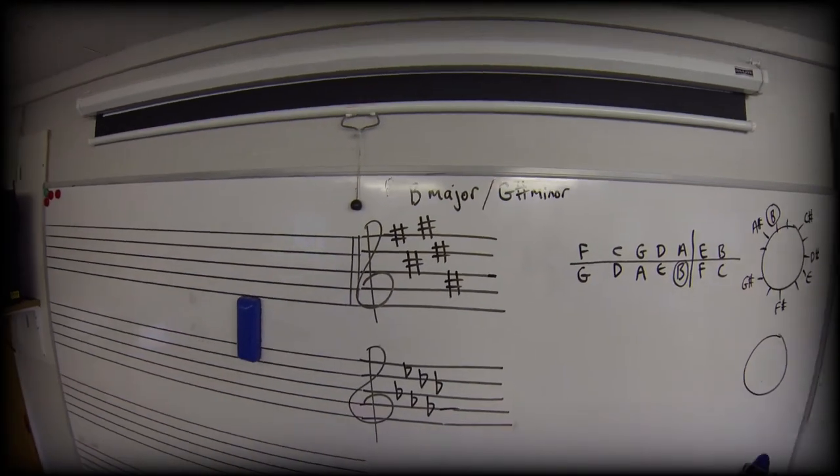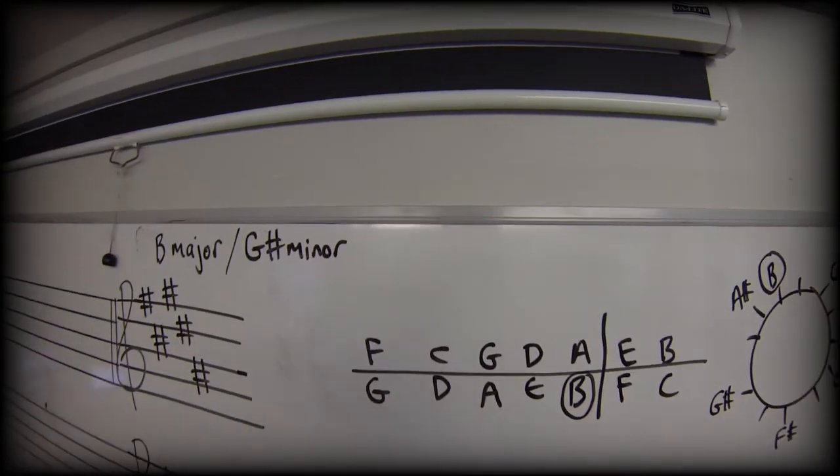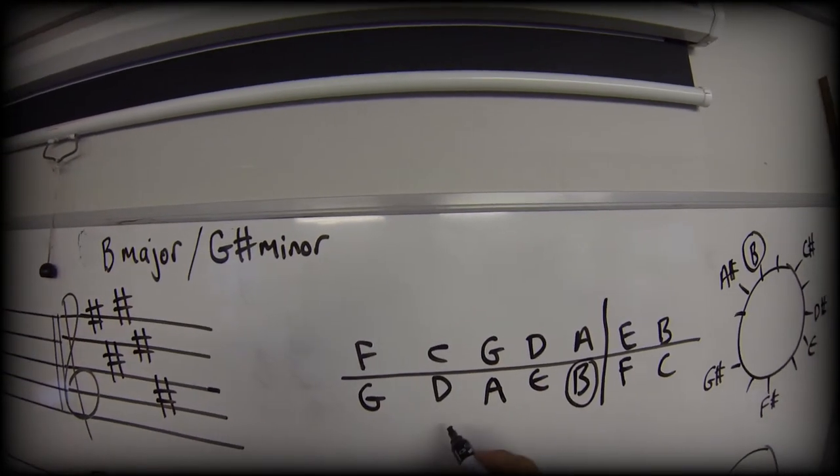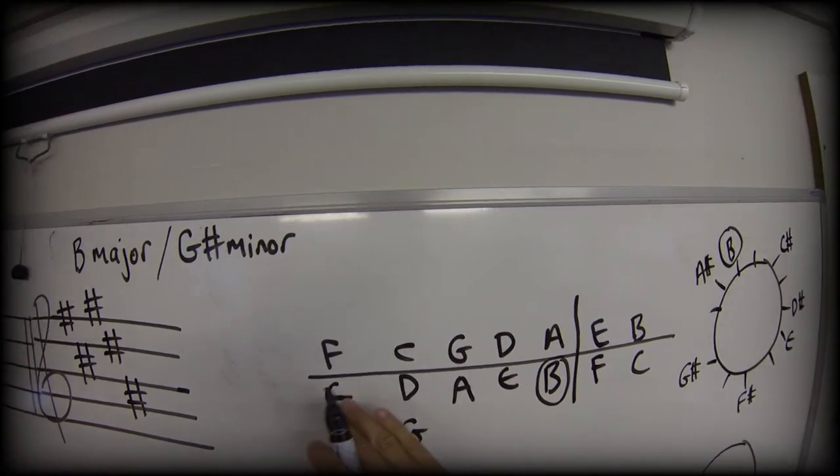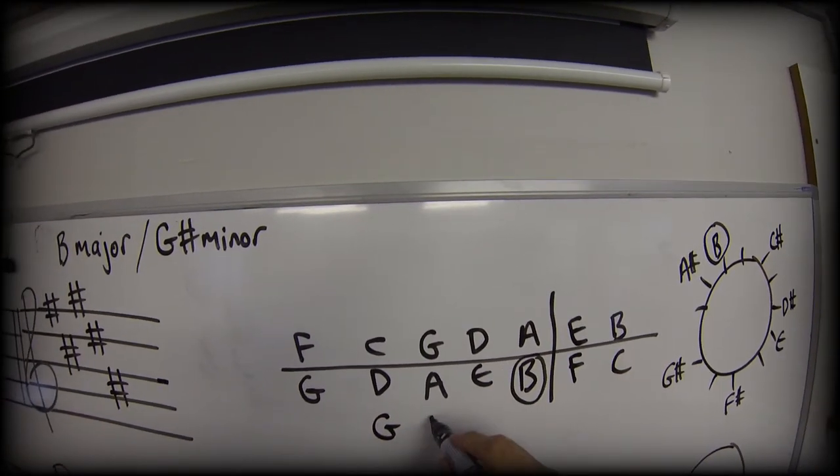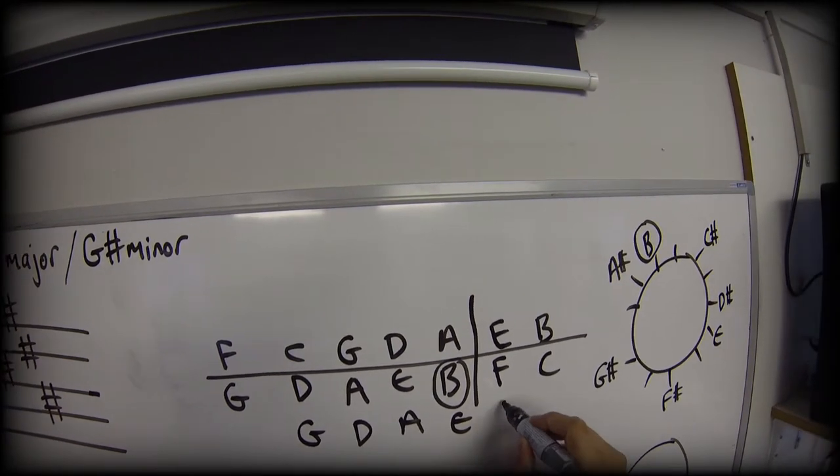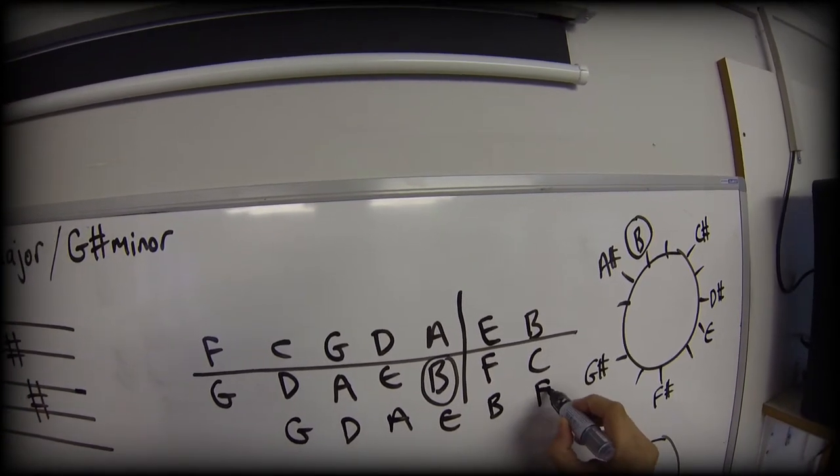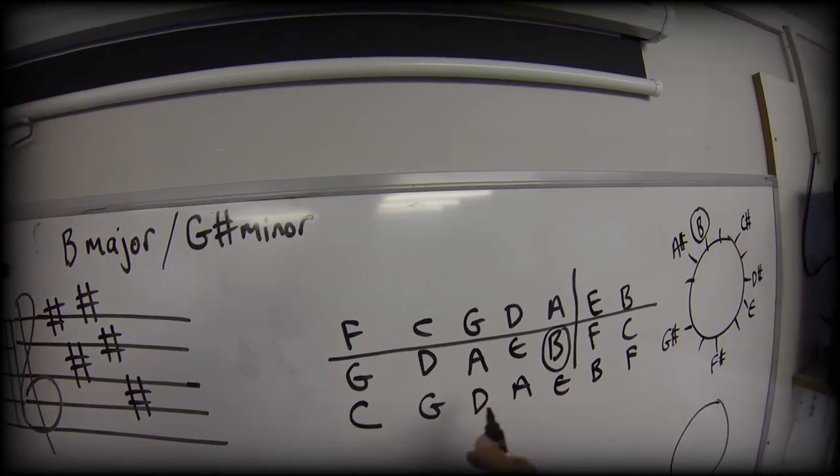So let's look now at my six flats. Well first, I just need to modify this table, and if you'll remember, all I do to make it work for flats is I move this bottom row along one position. So my G, D, A, E, B, F, and then C goes in my one gap at the other end.